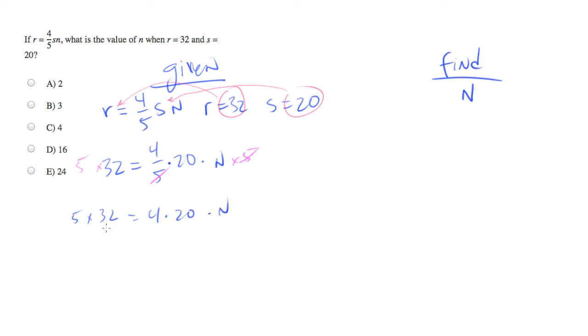Let's divide both sides by 4 times 20. So these will cancel out. And we end up with 5 times 32 over 4 times 20 equals n. And we simply need to simplify this to get our answer.